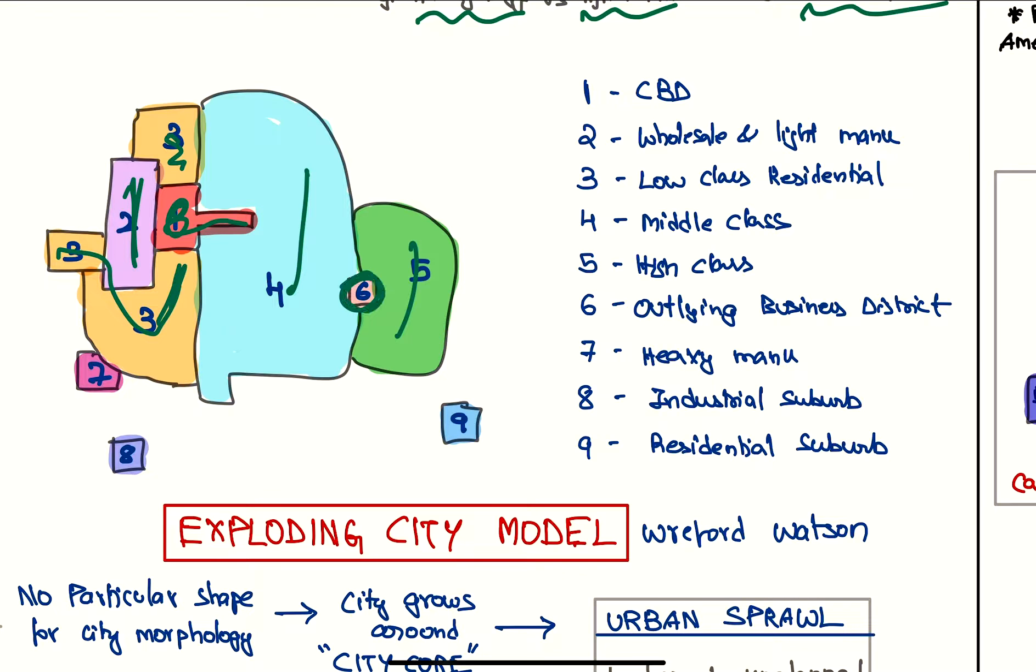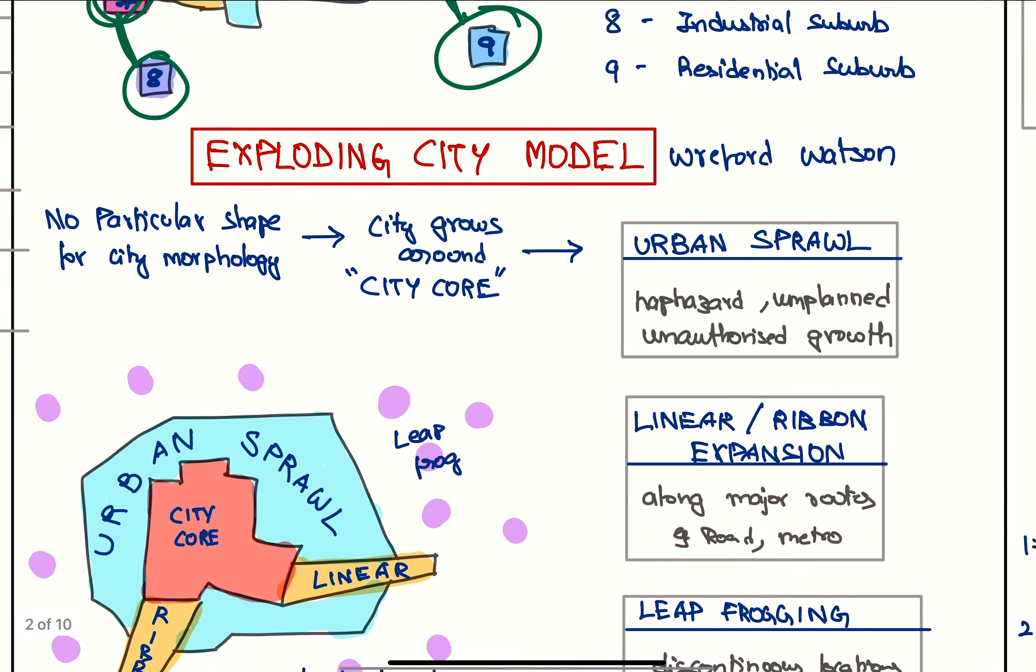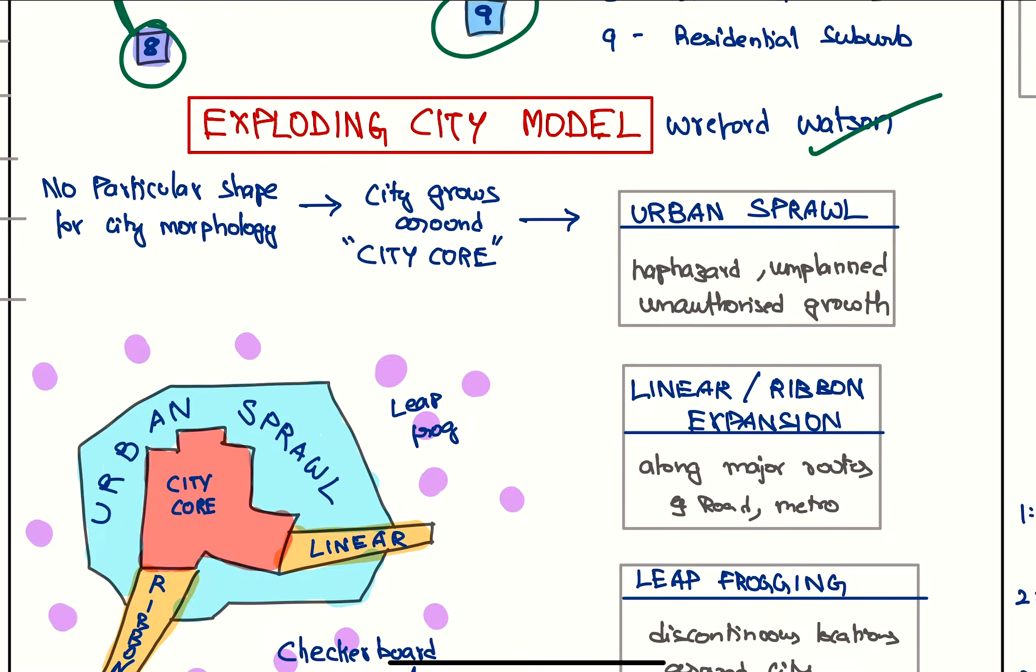This is an outlying CBD which is developing recently, this is heavy industry manufacturing units, this is the industrial suburb and this is a residential suburb - industrial suburb because it is near to industry and residential because it is close to residential areas. Next we have the exploding city model given by Branford Watson.